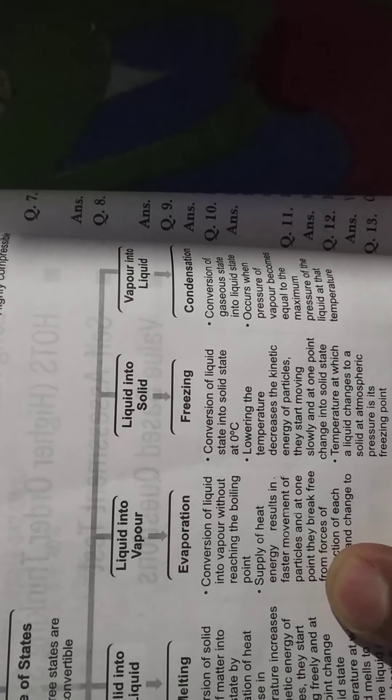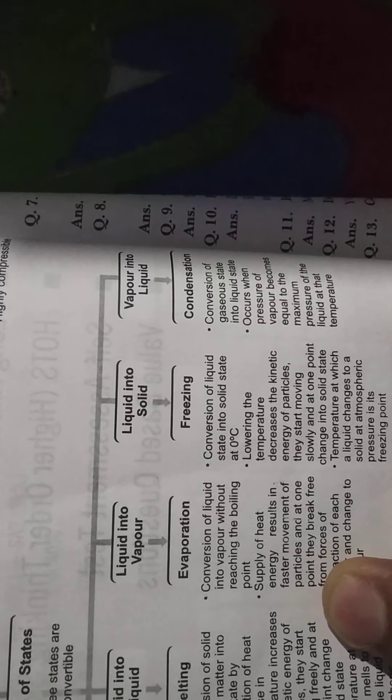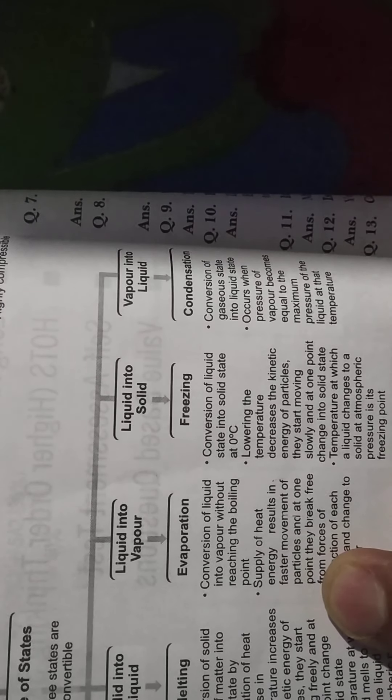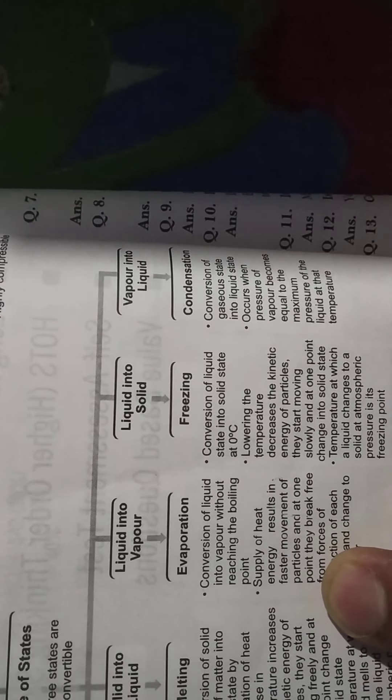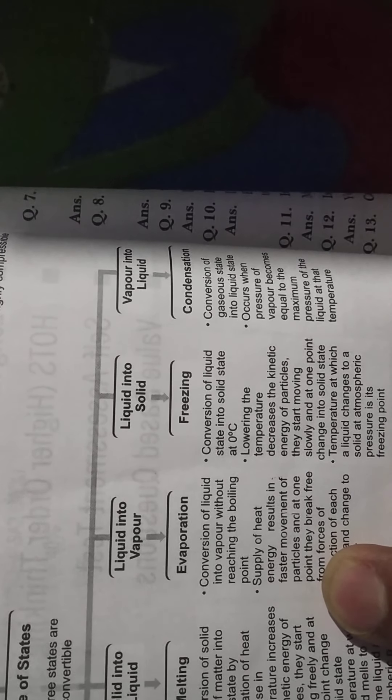What is condensation? Conversion of gaseous state into liquid state is called condensation. Condensation occurs when the pressure of the vapour becomes equal to the maximum pressure of the liquid at that temperature.